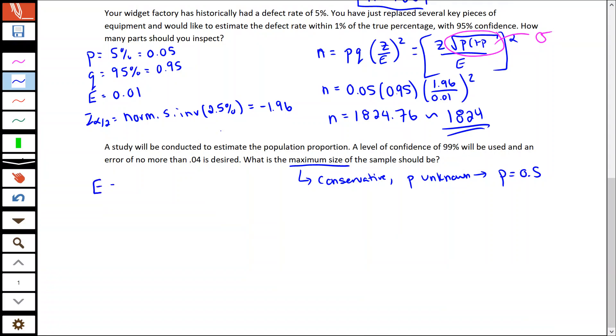It's given us here that the error is no more than 4%. Our alpha is going to be 1%. So we're going to use that Z of alpha over two, our norm.s.inverse of 0.5%, same as what we actually did above to give us a negative 2.575. All we have to do now is really fill in our formula - same formula as what we used in the question before.